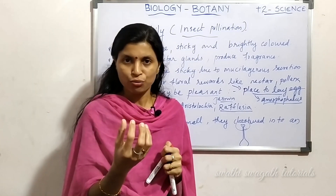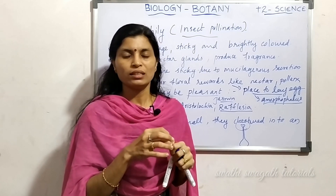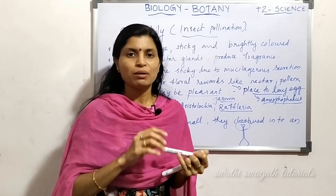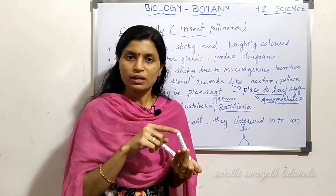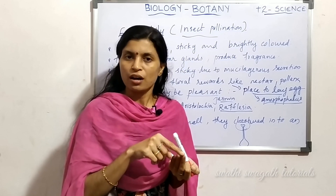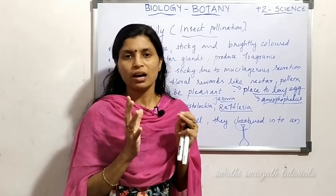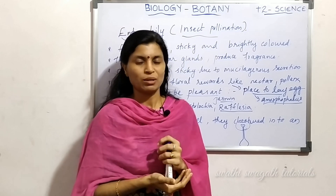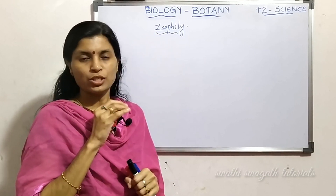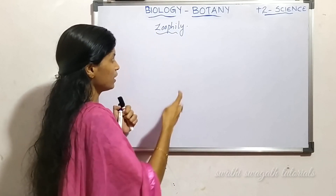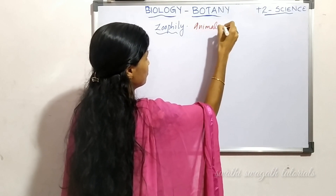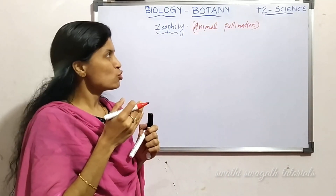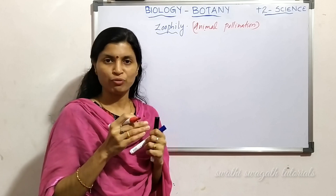Zoophily refers to animal pollination. Entomophily is a subgroup of zoophily. Zoophily includes insects, birds, humans, and other animals as pollinating agents. Even human beings themselves are pollinating agents — if you visit a garden, you can touch a flower, pick up pollen grains, and transfer them to another flower.